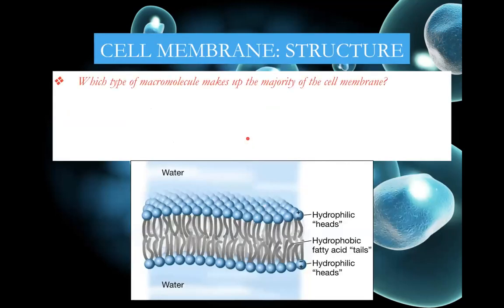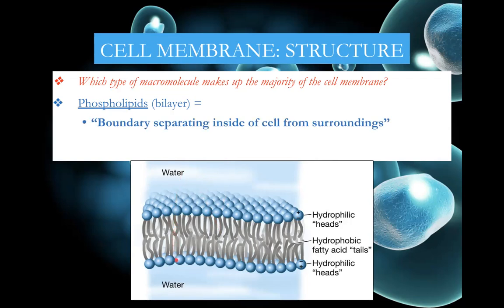The macromolecule that makes up the majority of the cell membrane is phospholipids — one of the lipids from last chapter. It forms what is called a bilayer, separating the inside and outside of the cell. The outside and inside of the cell are mostly water, so the phosphate end of the phospholipid orients toward the water. The hydrophobic, nonpolar fatty acid tails orient toward the inside, away from the water because they don't like water.